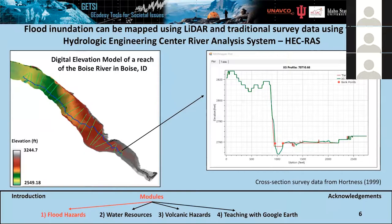Here on the left side of the slide we can see a digital elevation model derived from lidar of a reach of the Boise River in Idaho. The blue line is the river reach being analyzed, and the green lines crossing it are cross sections surveyed by the USGS using an electronic total station. On the right side we can see one of those cross sections — survey data combined with lidar to get an accurate reconstruction of the channel geometry.